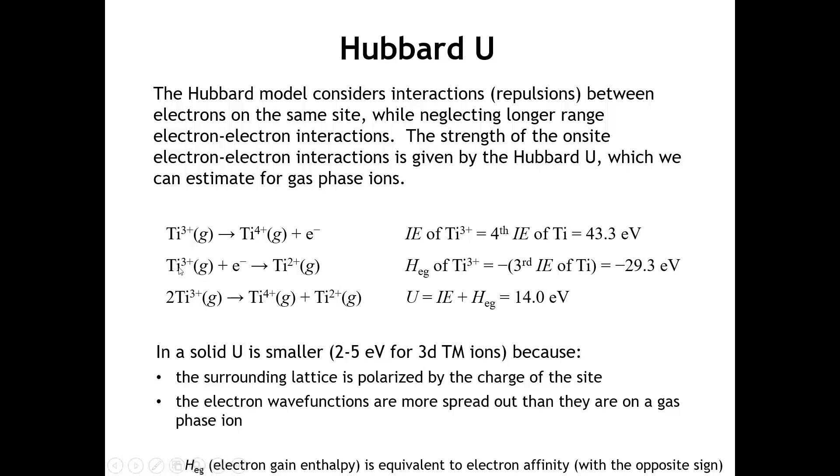The site where the electron jumps to, where titanium 3-plus goes to titanium 2-plus, is the electron affinity of a titanium 3-plus ion, or the electron gain enthalpy. That's the negative of the third ionization of titanium, minus 29.3 electron volts.